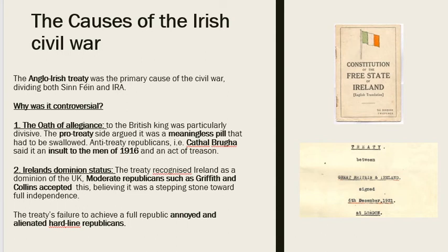The first controversial thing in the Anglo-Irish Treaty was the Oath of Allegiance. The Oath of Allegiance essentially stated that all Irish politicians had to swear an Oath of Allegiance to the British King every time they met up in Parliament. And naturally enough, you can see how that would cause a divide and cause some unhappiness among politicians.